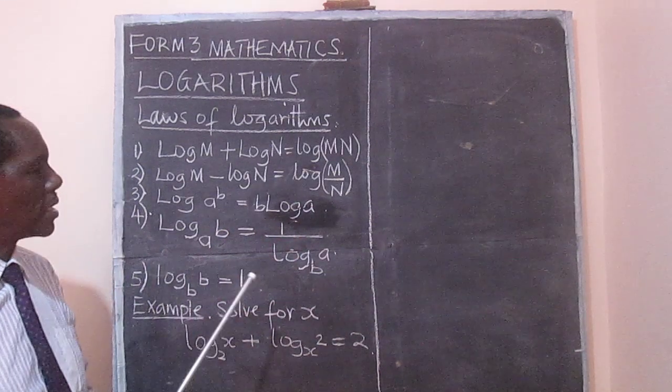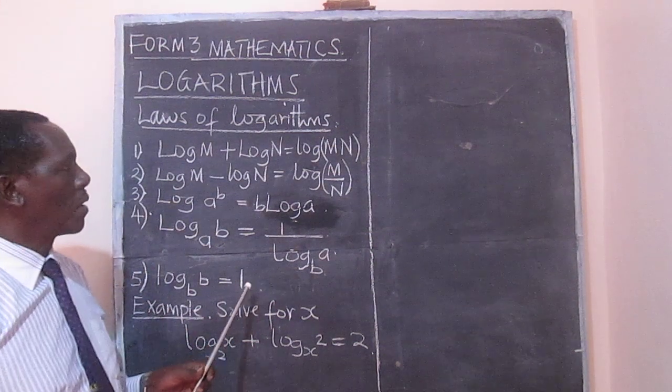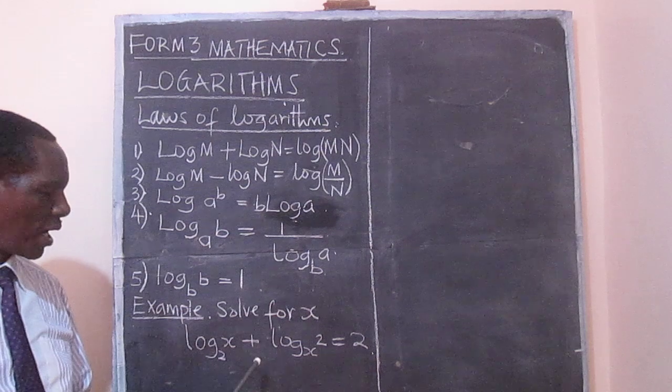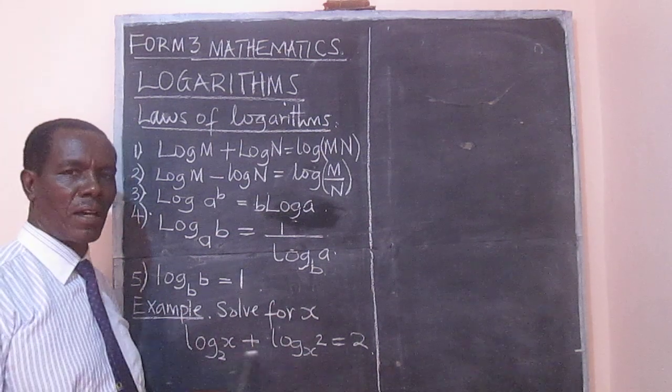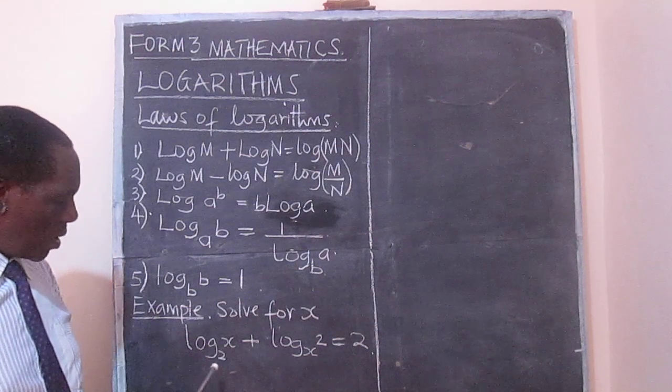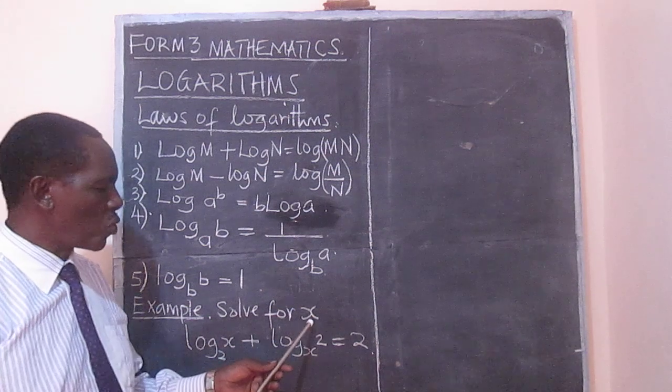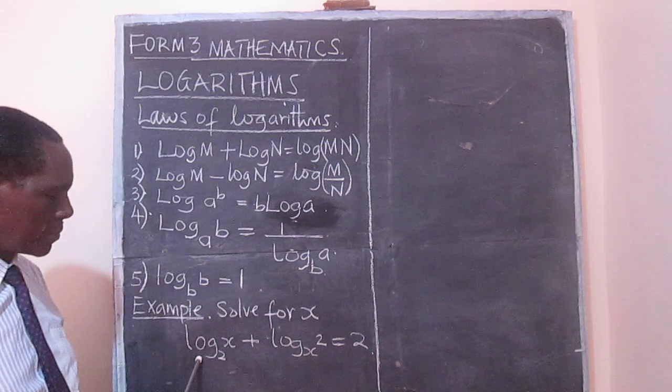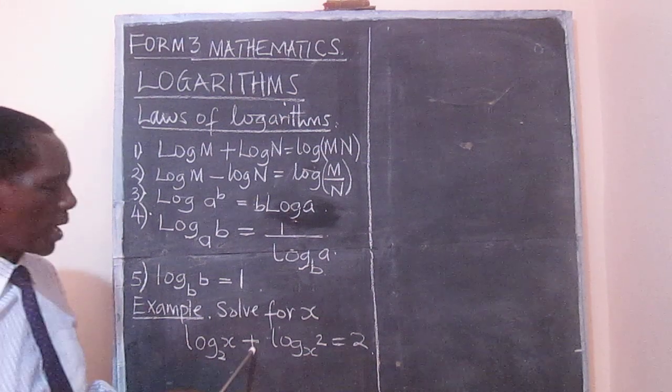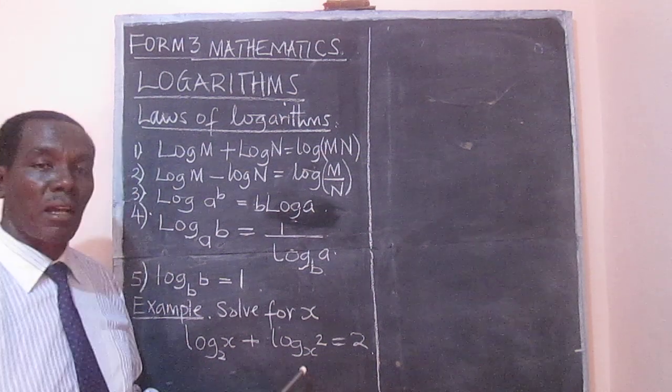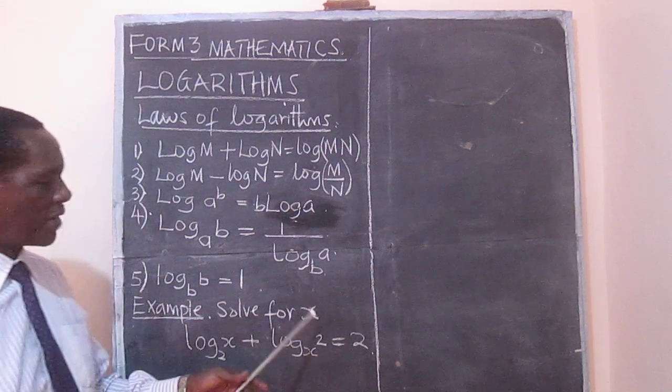So we would like to apply only one of these laws to help us work out this question, which has been asked by one of the viewers. So let's look at it. We have been asked to solve for x, and we are given logarithm to base 2 of x plus logarithm to base x of 2 equals 2. So find the value of x.